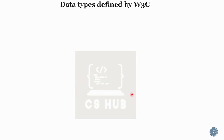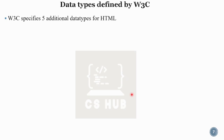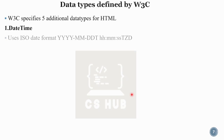W3C recommends five additional data types. The first is DateTime, which we can use in HTML. The DateTime format is based on the ISO date format.